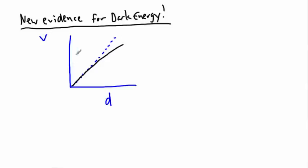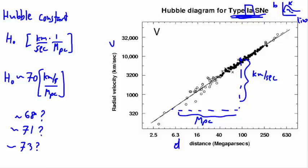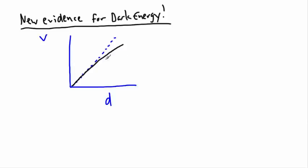For some given recession speed, we expect its distance to be some certain value, but instead its distance—because now we have these Type 1a supernovae as a distance indicator—these things tell us things in much greater detail than we ever had. So that tells us these things are actually farther away.